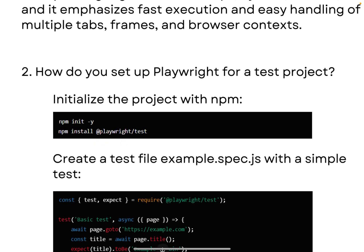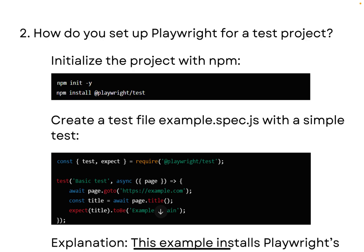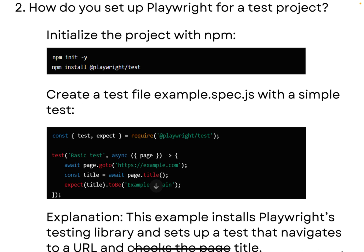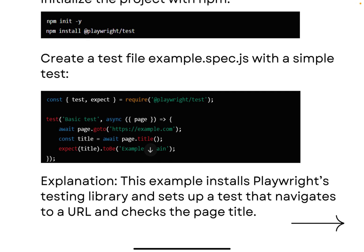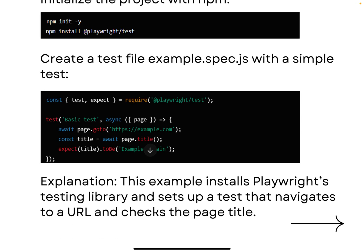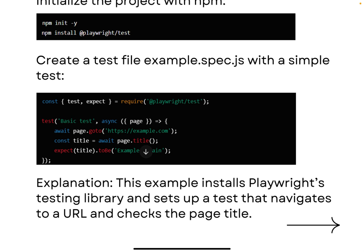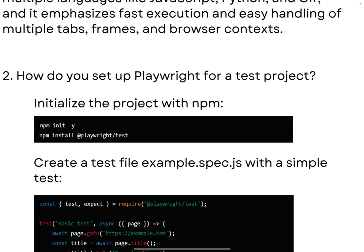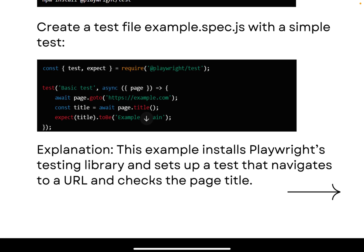The next question is: how do you set up Playwright for a test project? The basic commands to remember are: initialize the project with `npm init -y`, then run `npm install @playwright/test`. Next, create a test file like `example.spec.js` with a simple test. This installs the Playwright testing library and sets up a test that navigates to a URL and checks the page title — that's what you can tell your interviewer.